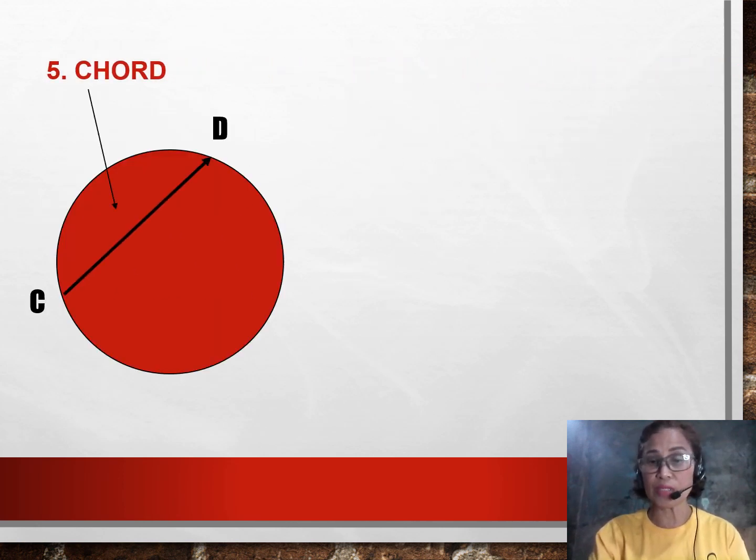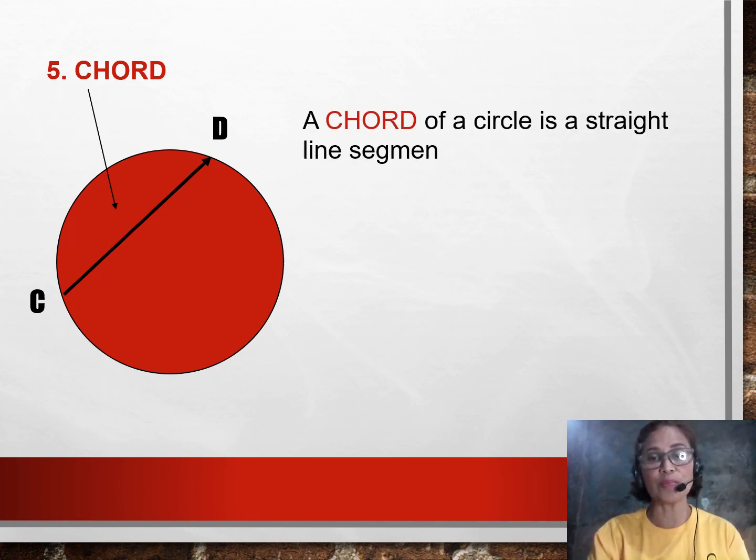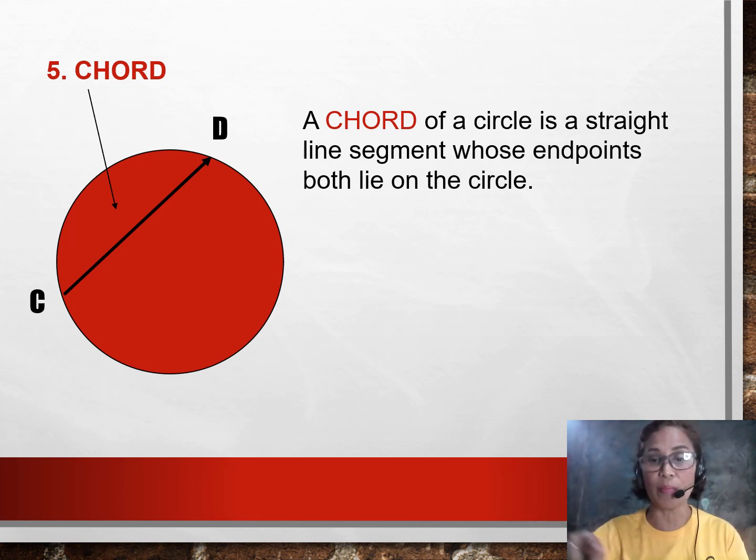The fifth is what we call as the chord of a circle. A chord of a circle is a straight line segment whose endpoints both lie on the circle or on the circumference. You might notice, is a chord also a diameter? To answer that, all diameters are chords, but not all chords are diameters.